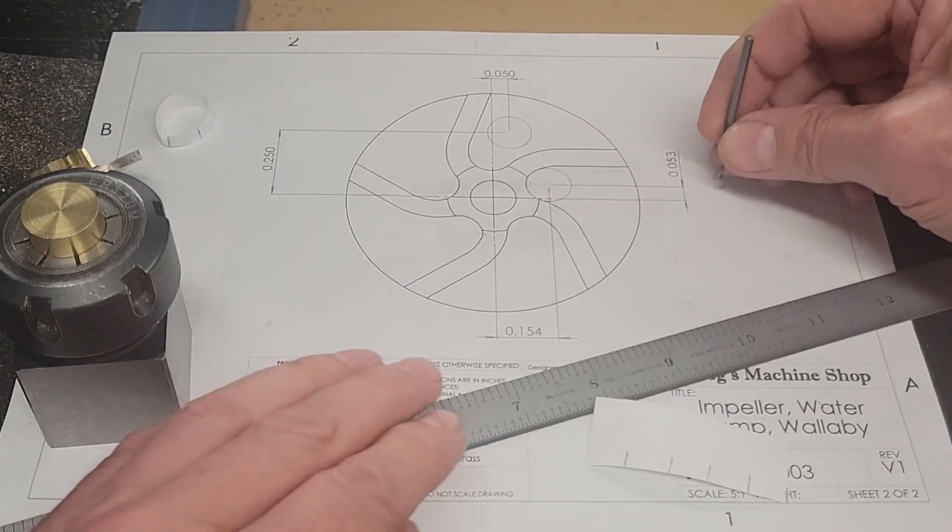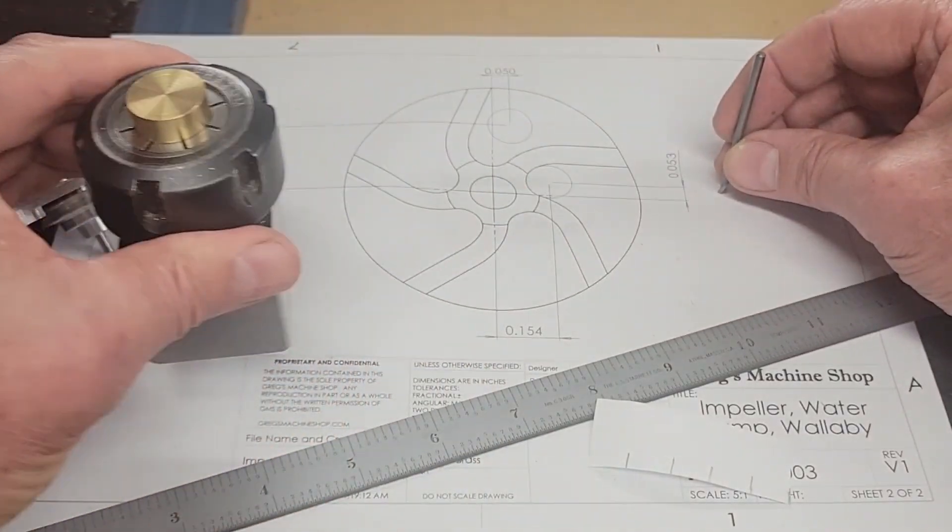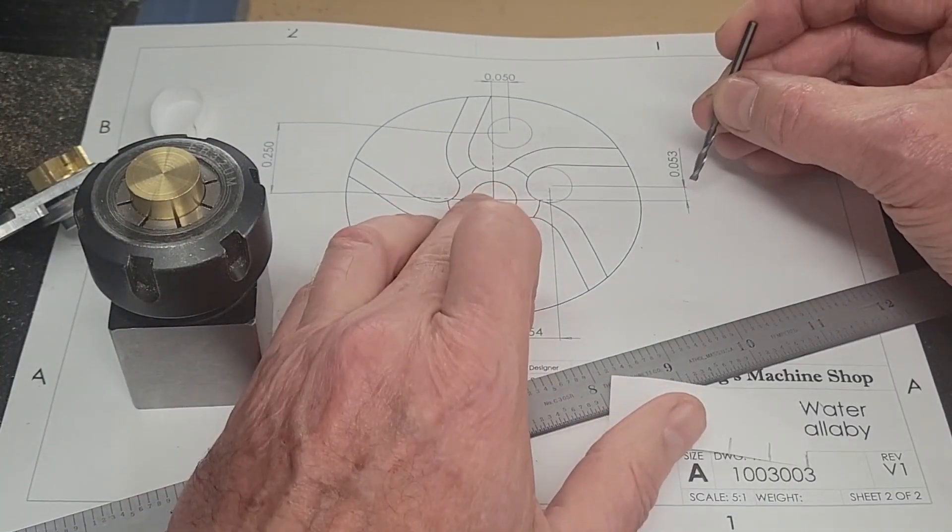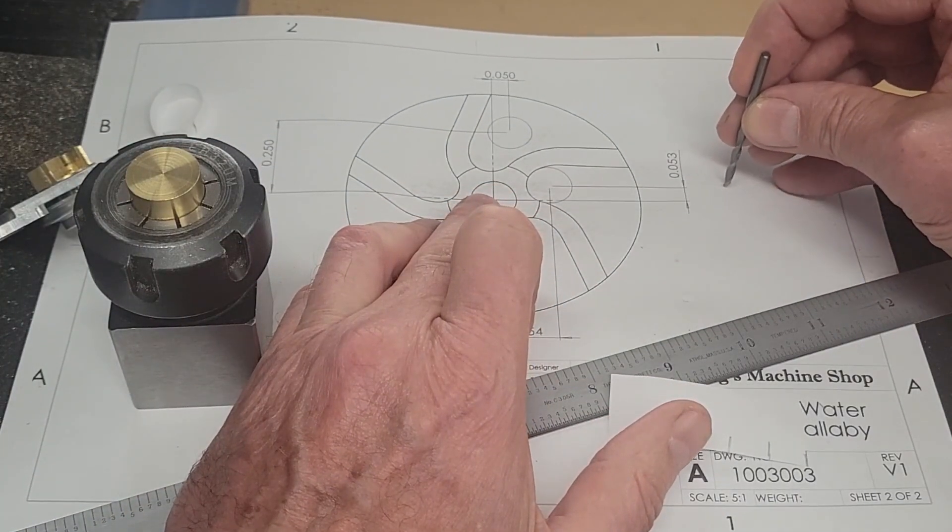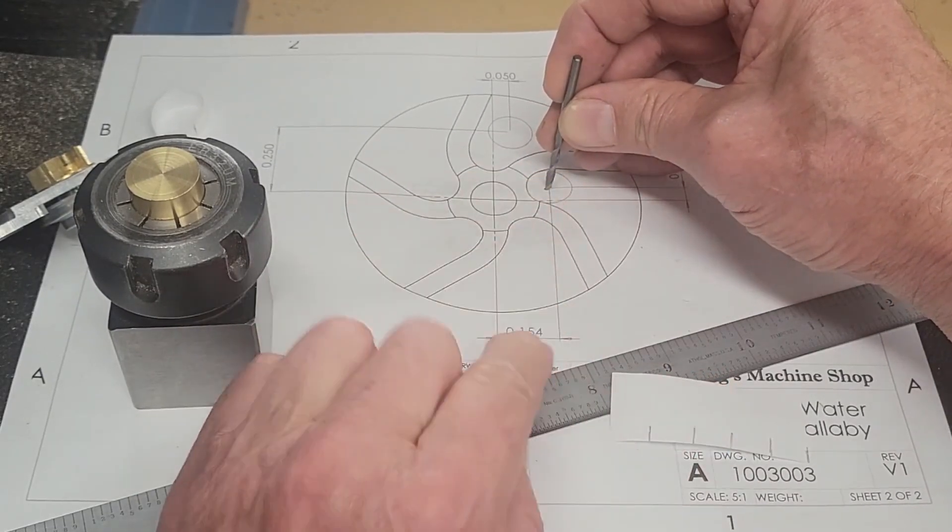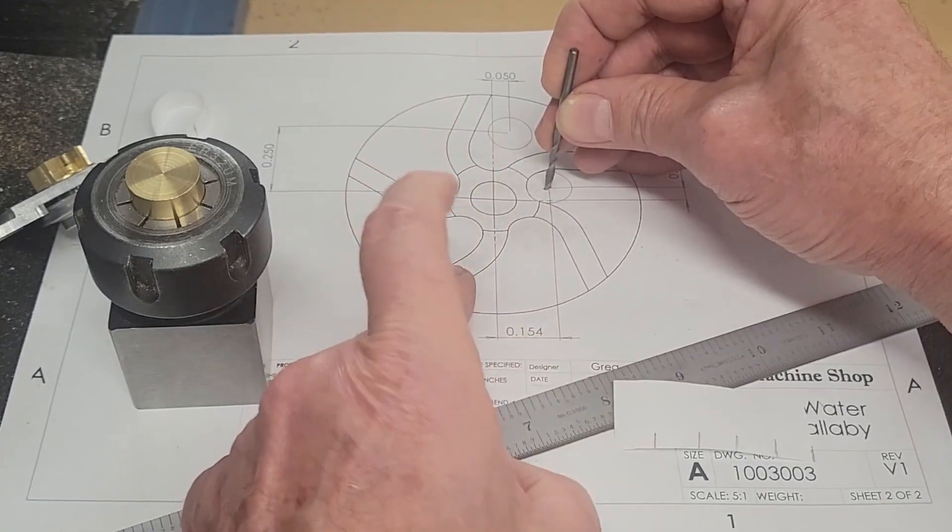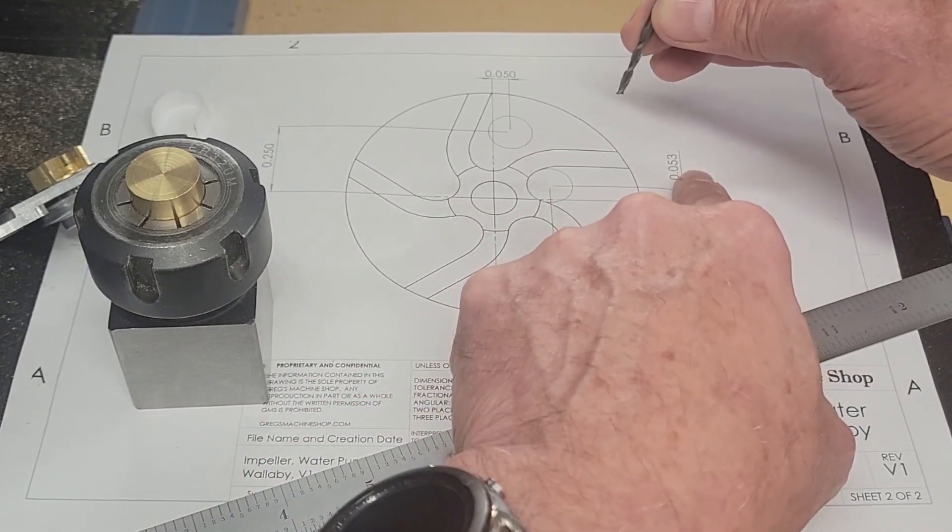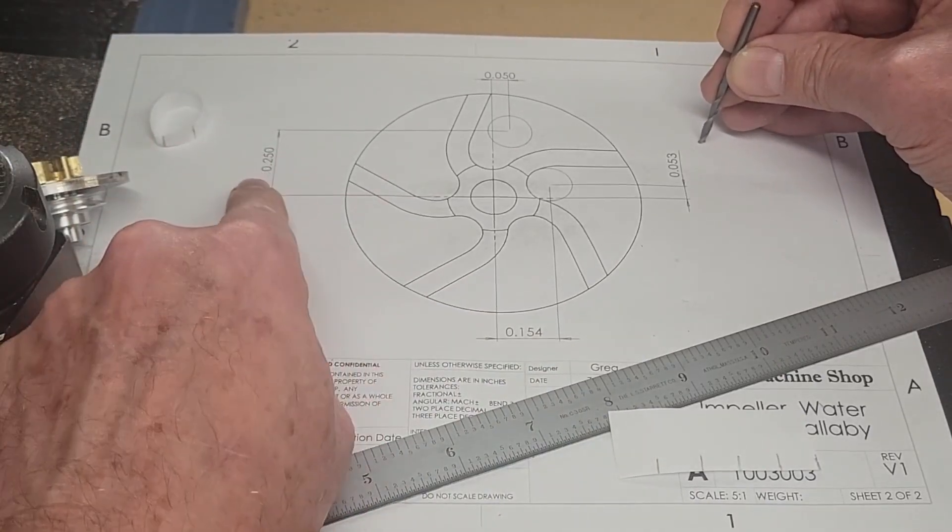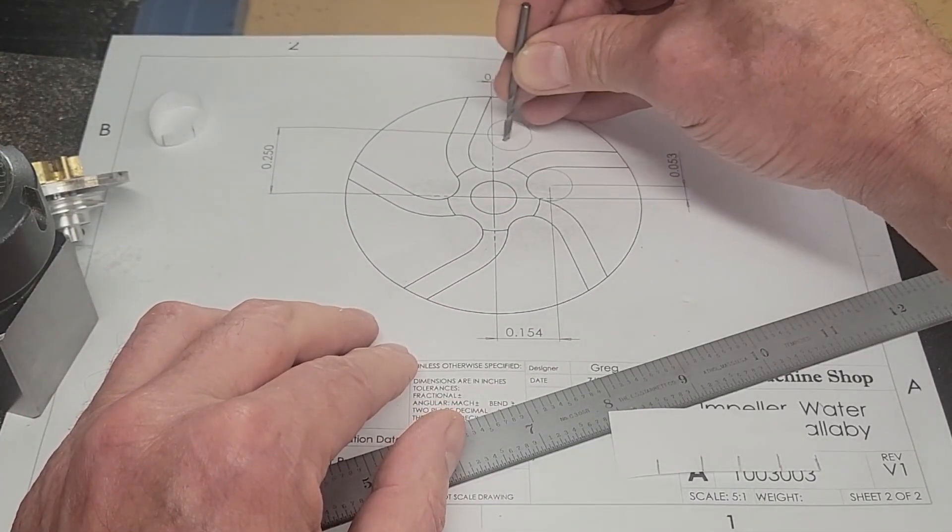We're going to take an eighth inch end mill and we're going to bring it in from the side and we're going to stop at this point here, which is 154 and 53. Then we're going to pull it back out, move it up a quarter of an inch from the center and bring it in again, then bring it out.